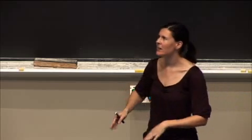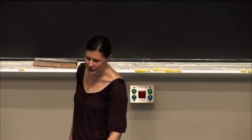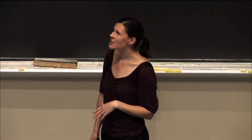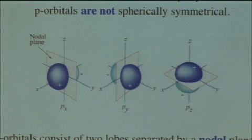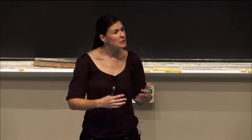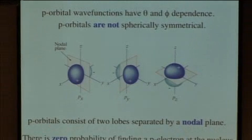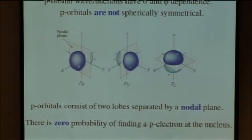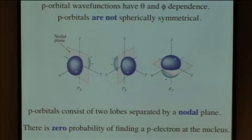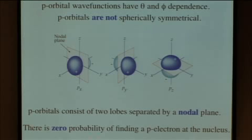The two lobes are split by what's called a nodal plane, shown in light orange in this picture — a whole plane separating the two lobes where there is absolutely no electron density. The wave function at all points in this plane is equal to zero, so therefore the wave function squared is also zero. If in this entire plane we have zero probability of finding a p electron, and the plane goes directly through the nucleus in every case, what we can also say is that there is zero probability of finding a p electron at the nucleus.